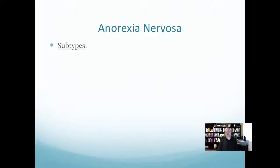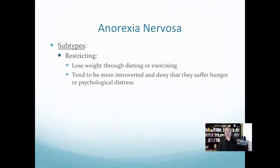Anorexia nervosa has some subtypes. The first is the restricting subtype — losing weight through dieting and exercise. These individuals tend to be more introverted and deny that they suffer hunger or psychological distress.